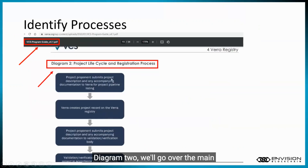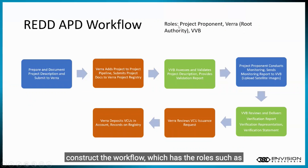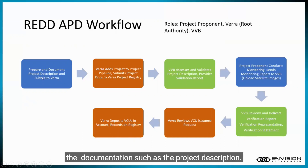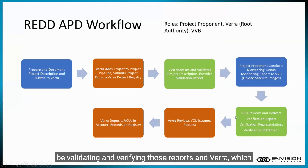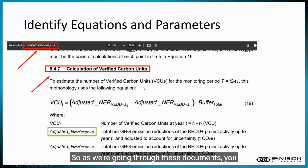Diagram 2 will go over the main processes of the project life cycle. And from those pieces of information, you can construct the workflow, which has roles such as the project proponent — submitting documentation such as the project description and the monitoring report — the VVBs, which are going to be validating and verifying those reports, and VERA, which is going to be reviewing and issuing VCUs into accounts so that they can be traded or retired to offset emissions.